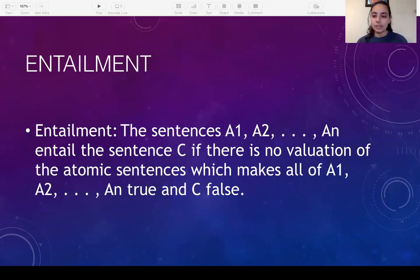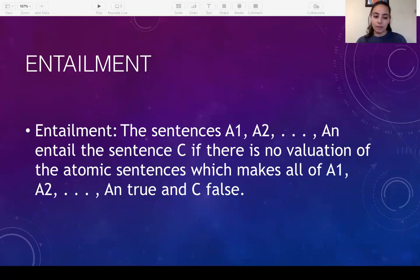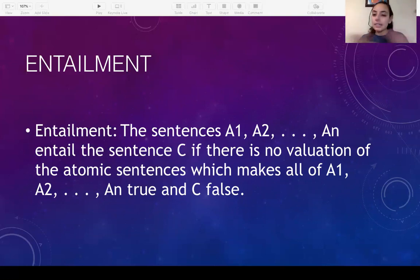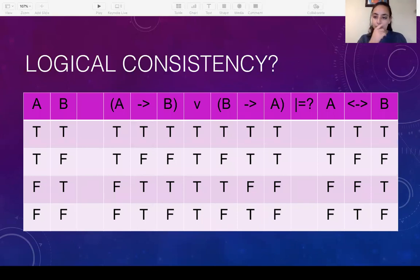So what about entailment? This one is a little tricky, but it's honestly super easy — the wording just gets a bit wonky, so be very careful. Sentences A1, A2, and so on — the premises — entail conclusion C if there is no valuation of the atomic sentences which makes all of A1, A2 true and the conclusion false. In other words, there's no case where all the premises are true and the conclusion is false.